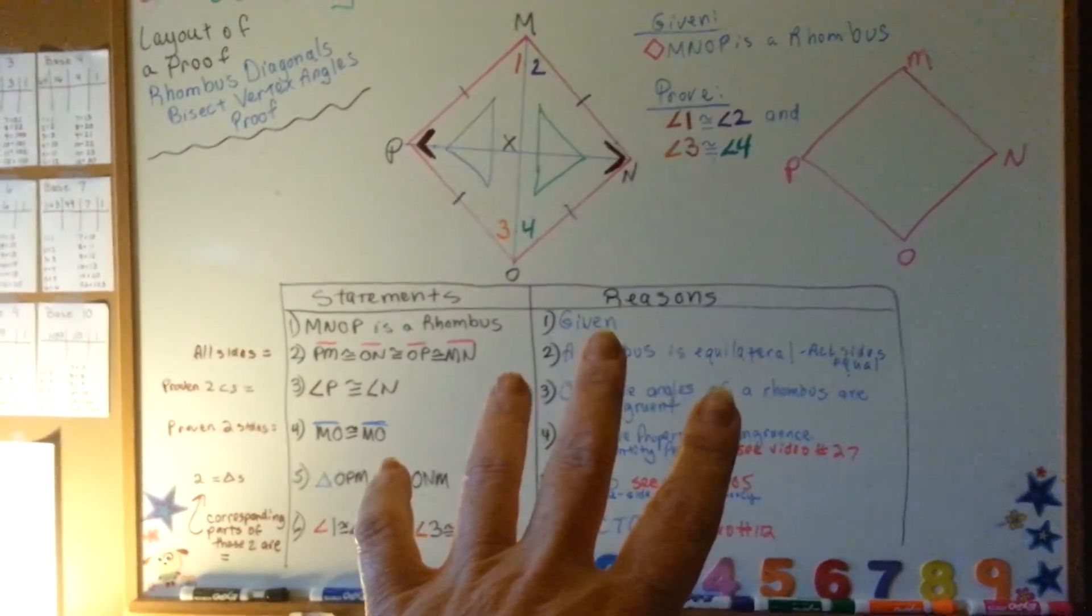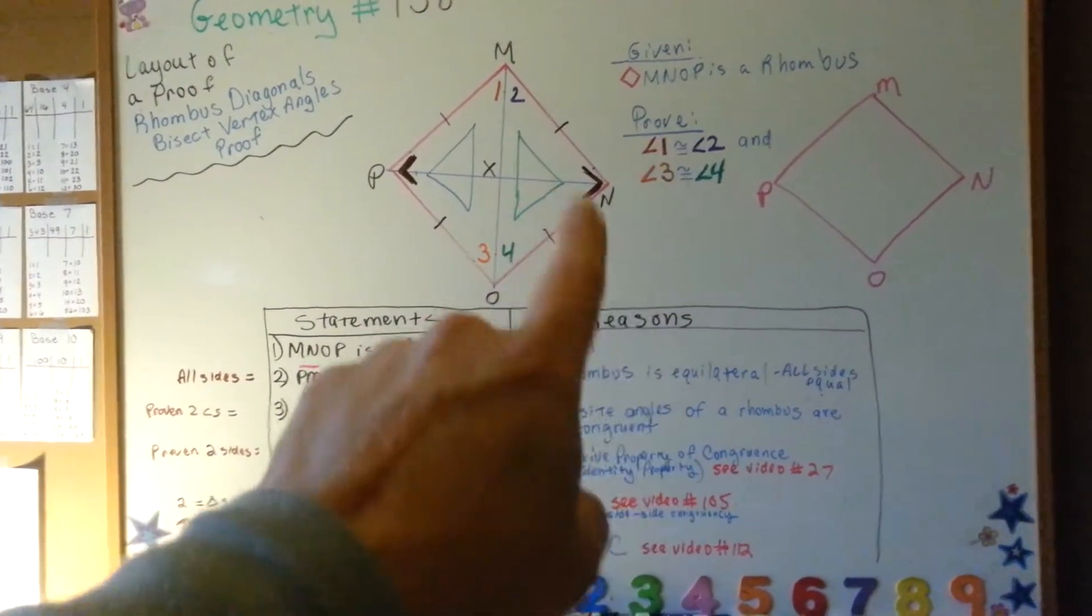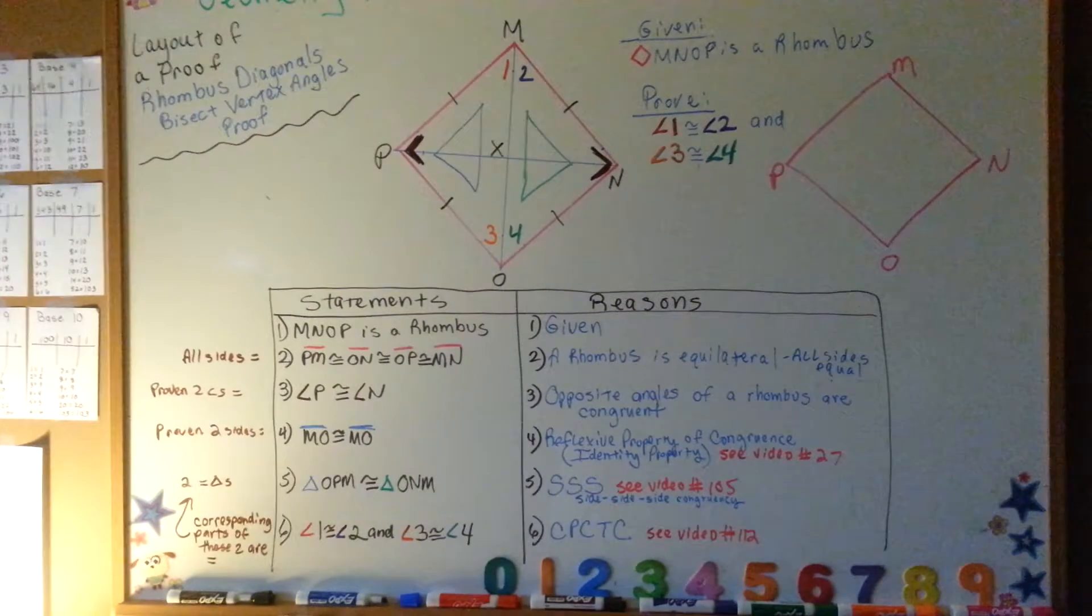This is our proof table. This is what is given, the information, and this is what we need to prove. I've color-coded things to make it a little more understandable.